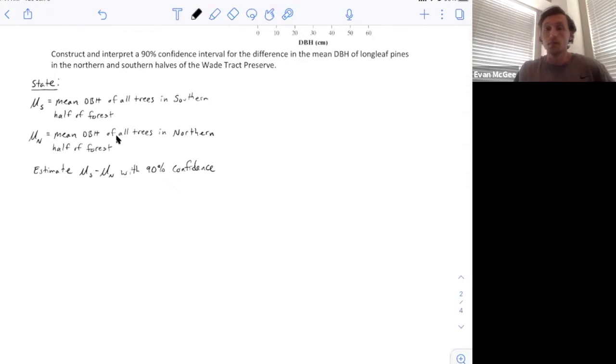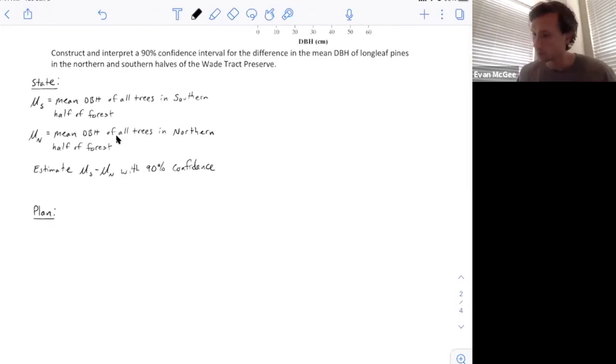Next, we'll plan by stating what we're going to use and checking the conditions to make sure we can proceed with this two-sample t-interval. It's a two-sample t-interval because we're comparing two population means. We check the random condition: both samples were random samples, randomly selected and independent, so they don't influence each other.